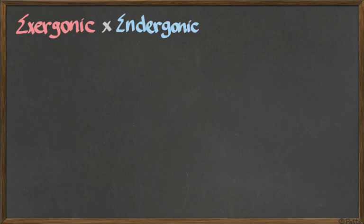Exergonic is a chemical reaction that releases energy, and endergonic is a chemical reaction that needs energy to be put in to be performed. So exergonic - outside energy goes away - and endergonic - energy goes inside the chemical reaction.